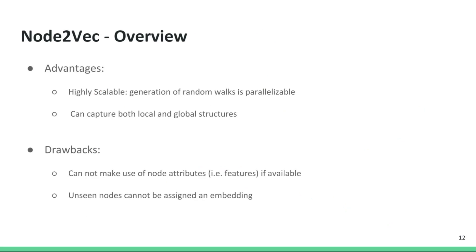Let's review some properties of Node2vec. An advantage of Node2vec is that it is highly scalable — random walks are quick to generate and several can be generated in parallel. The parameters of Node2vec can be tuned to capture either local or global structures. However, there are several disadvantages: first, it does not make use of node features if they are available. Secondly, nodes that are unseen during training cannot be assigned an embedding.